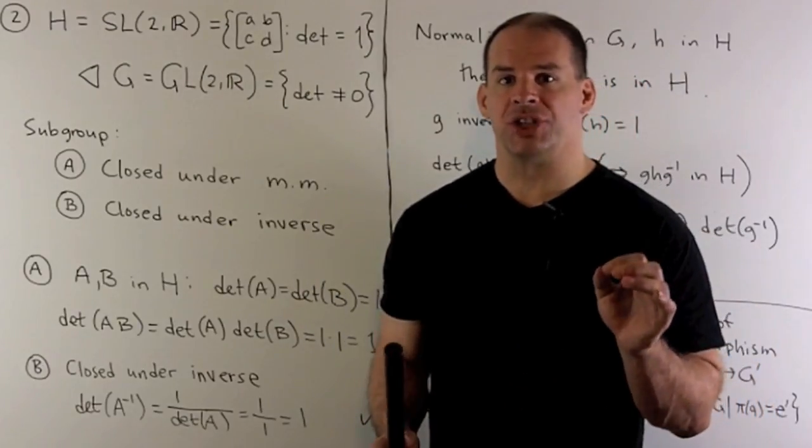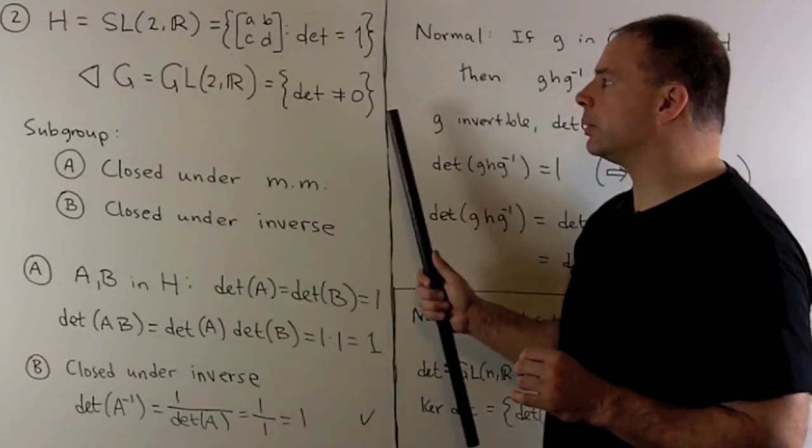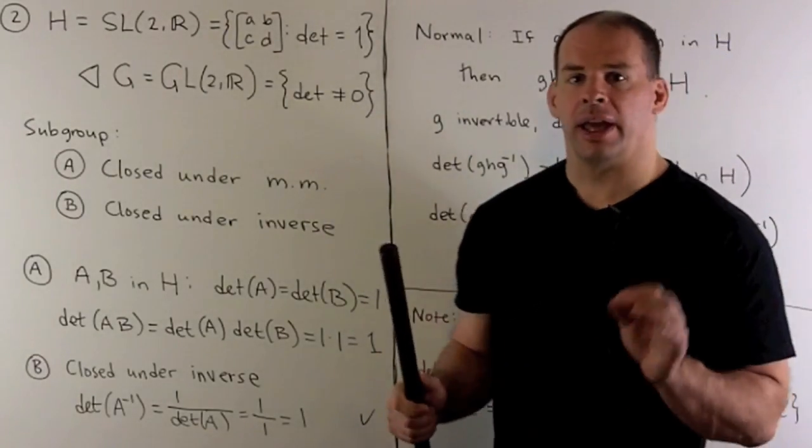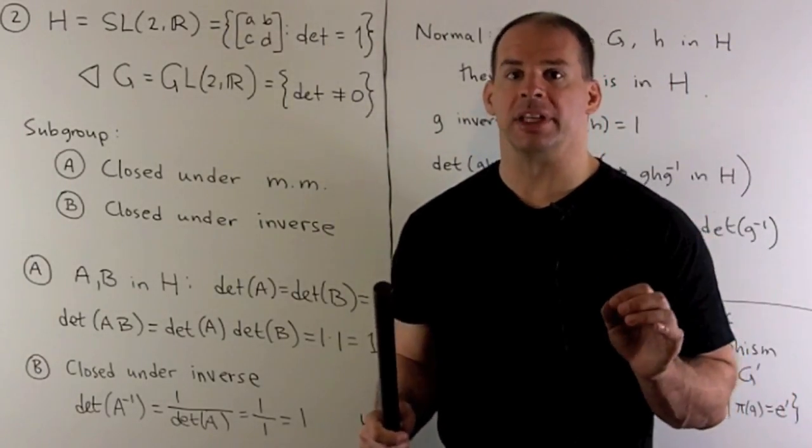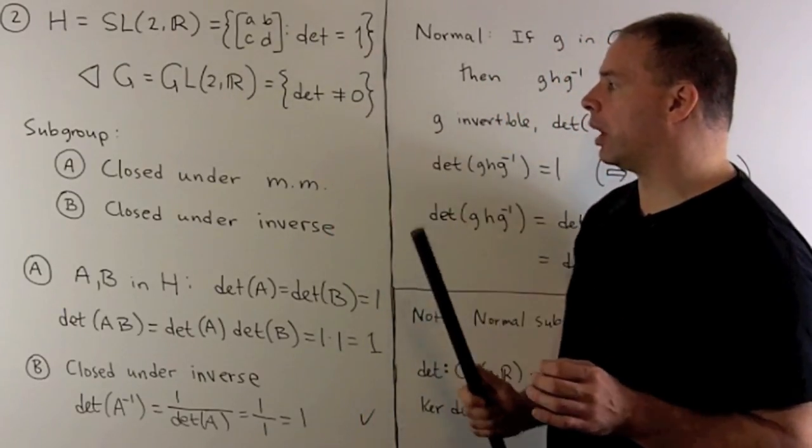First, H is a subset of G, so if my determinant is equal to one, it's definitely not equal to zero. And H is non-empty, so it contains the identity element, which has determinant equal to one.